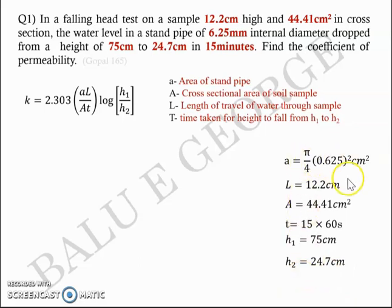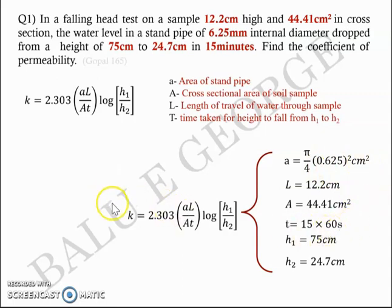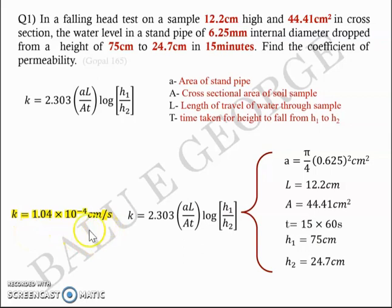Now we have all the data. Substitute into the equation making sure you have consistent units — mm converted to cm, and time converted from minutes to seconds. Substituting gives an answer in cm per second. The coefficient of permeability is 1.04 × 10⁻⁴ cm per second.